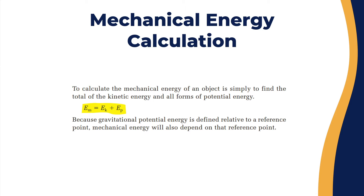By now we know that mechanical energy is the combination of kinetic and potential energy. To calculate the mechanical energy of an object, you simply need to find the total of the kinetic energy and all forms of potential energy, which means E mechanical equals E kinetic plus E potential.